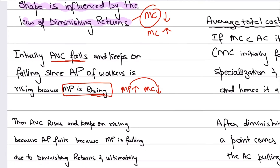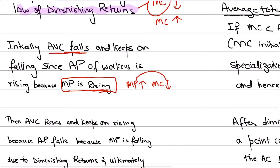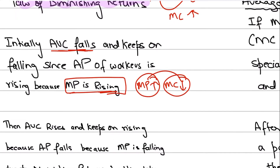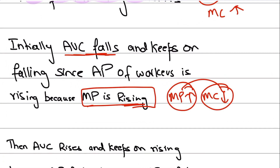Because of this, as you keep hiring more variable factors in the short run, those variable factors are making the best use of fixed factors and they're specializing. Labor productivity is high, labor efficiency is high, there's division of labor, and there are increasing returns to labor. Because of that, your marginal product is going up and your marginal cost is going down. At this point, your marginal product is rising and it's greater than your average product as well, and that is actually driving your average product up.